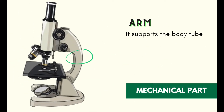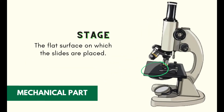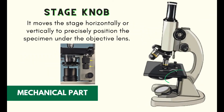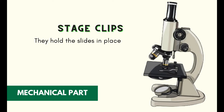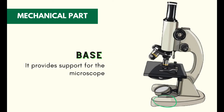The arm supports the body tube. The stage is the flat surface on which the slides are placed. The stage knob moves the stage horizontally or vertically to precisely position the specimen under the objective lens. Stage clips hold the slides in place. The inclination joint allows the microscope to be tilted for more comfortable viewing. The base provides support for the microscope.